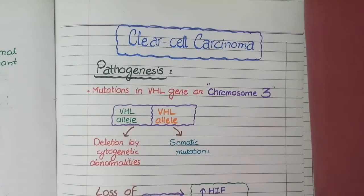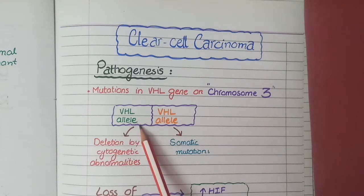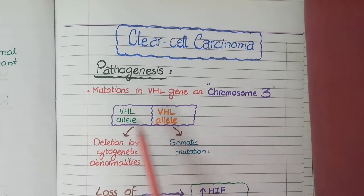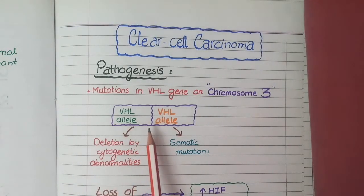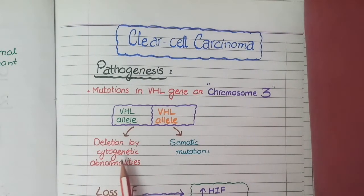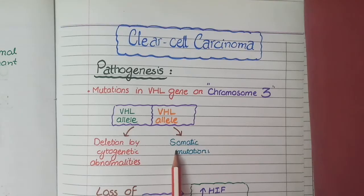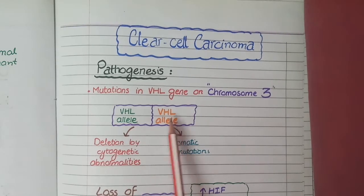In our cells there is a pair of each chromosome, and on each member of a pair there are two corresponding alleles. VHL gene is also in the form of two alleles, one on each chromosome number 3. In clear cell carcinoma, one VHL allele undergoes deletion by cytogenetic abnormalities, and the other VHL allele undergoes somatic mutation due to chemical carcinogens like cigarettes or other carcinogenic elements, or alternatively it may become silenced due to hypermethylation.